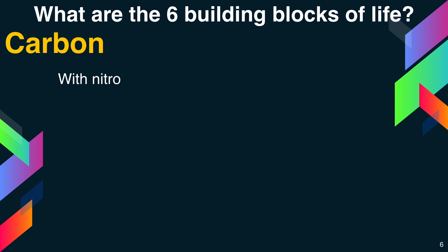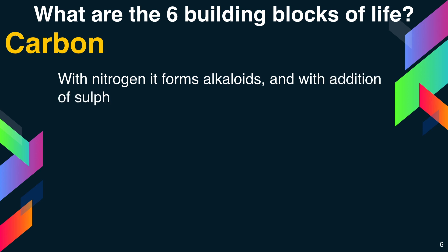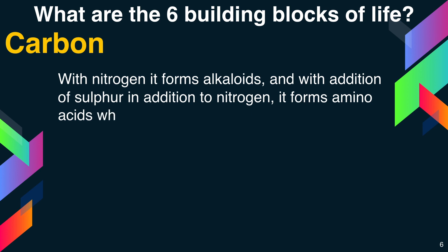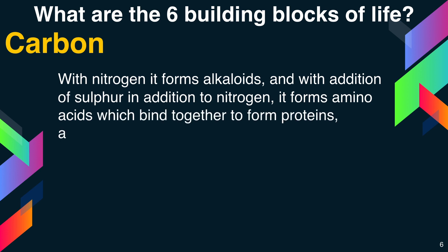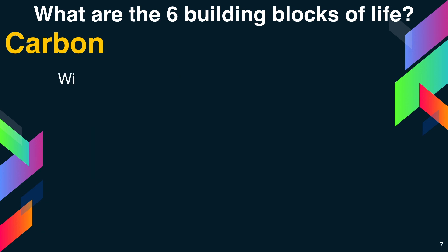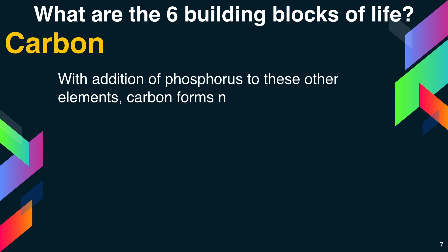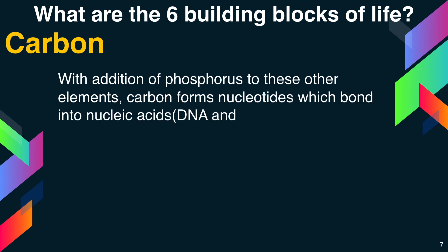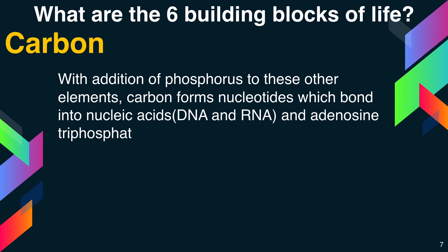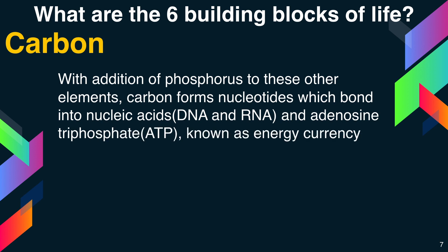With nitrogen, carbon forms alkaloids. With the addition of sulfur in addition to nitrogen, it forms amino acids which bind together to form proteins, antibiotics, and other products. With the addition of phosphorus, carbon forms nucleotides which bond into nucleic acids such as DNA, RNA, and adenosine triphosphate — that is, ATP — known as the energy currency of cells.